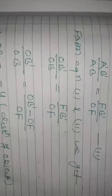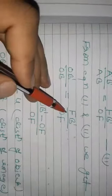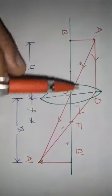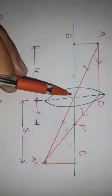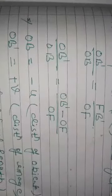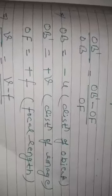From equations one and two: OB'/OB = FB'/OF. Now FB' = OB' minus OF. So the equation becomes: OB'/OB = (OB' minus OF)/OF. Here OB is the distance of the object, which is minus u (on the left side of the lens). OB' is the distance of the image, which is v (positive, on the right side). OF is the focal length, which is plus f.